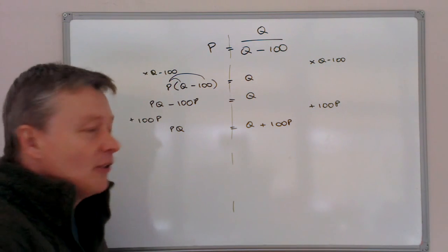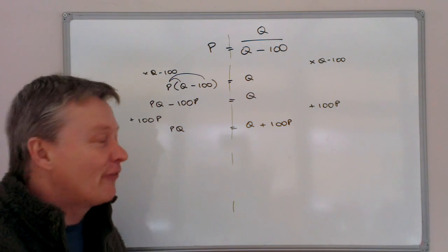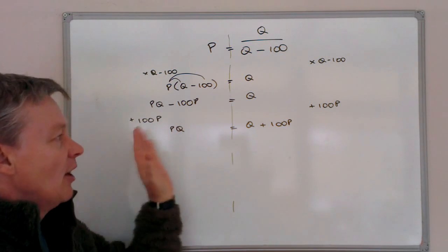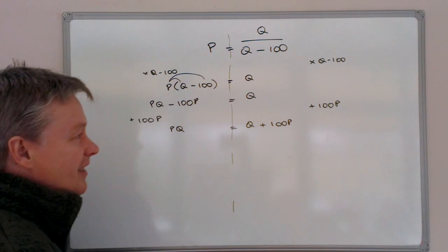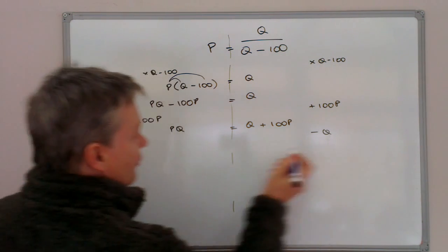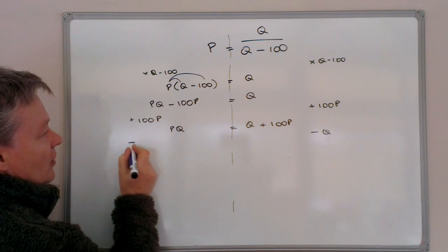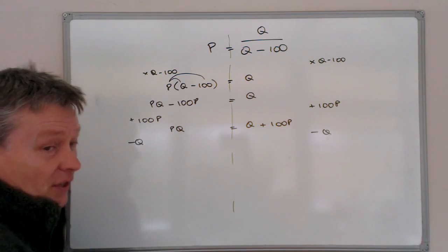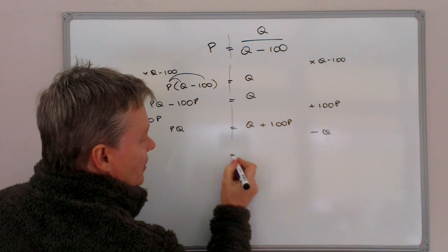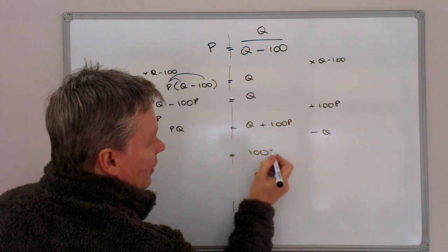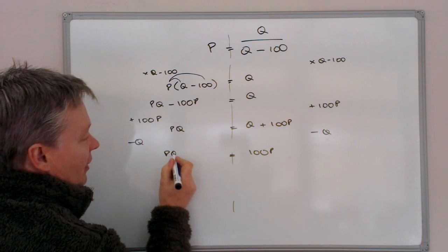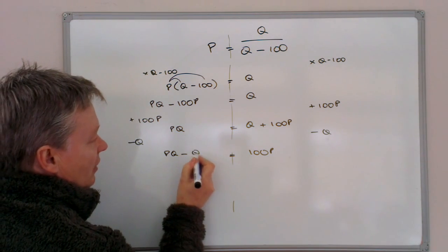Now it looks like I'm not much better off. But what it will allow me to do now is to move Q over this side by taking Q away from here. So if I'm minus Q from there, I also have to minus Q from this side. So on this side, that's going to give me 100P. On this side, it's going to give me PQ minus Q. Excellent.